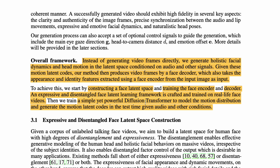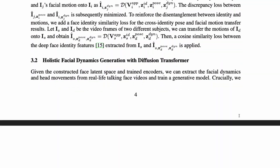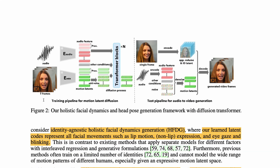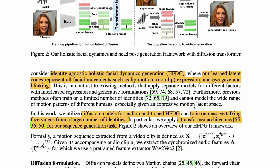They use a simple yet powerful diffusion transformer to model the motion distribution and generate motion latent codes at test time given the audio condition. The training pipeline is for motion latent diffusion, and the test pipeline is for audio-to-video generation. At test time, a single frame is encoded to extract identity and appearance information, combined with audio features, and together using the transformer block and the diffusion denoising process, this creates the wonderful diffusion transformer architecture.